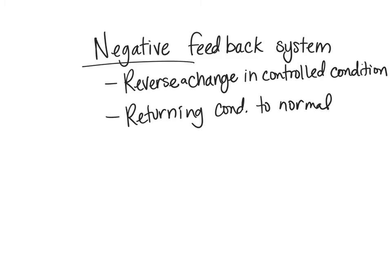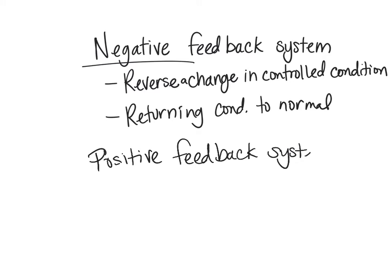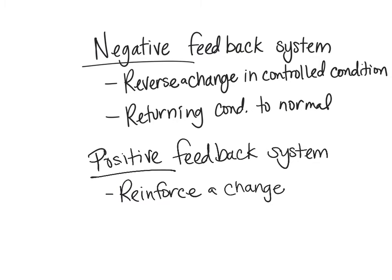The other type of feedback system is our positive feedback system. In a positive feedback system, we reinforce a change — we're increasing something and making it continue. It continues until it's been interrupted, and then that returns it back to homeostasis. This is not very common, but there are a couple of major examples in the body.